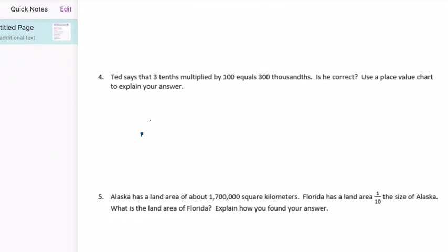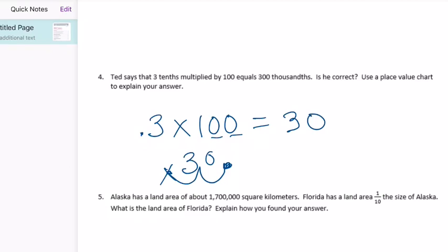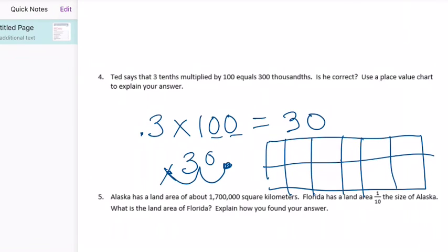Ted says that 0.3 multiplied by 100 equals 0.300. Let's see if he's correct. If we have 0.3, we multiply it by 100, 10 to the second power, we're going to move our decimal point two places to the right. One, two. New decimal point's there. That's gone. 0.3 times 100 equals 30. So he is not correct. They want us to use a place value chart. You could draw your place value chart here. If you have three tenths times 100, moving everything over, three ends up there. You got to fill that in with a zero, so you get 30.